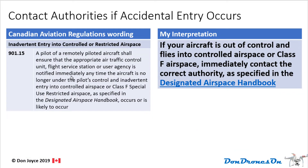Rule 901.15: you must contact authorities if an accidental entry into controlled or restricted airspace occurs. So if your aircraft is out of control — you're in a fly-away situation — and it flies into controlled airspace or Class F airspace, immediately contact the correct authority as specified in the designated airspace handbook.